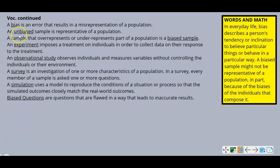Here are the rest of the vocabulary terms — lots of vocab today. A bias is an error that results in a misrepresentation of a population. An unbiased sample is representative of a population. A sample that over-represents or under-represents part of a population is a biased sample.